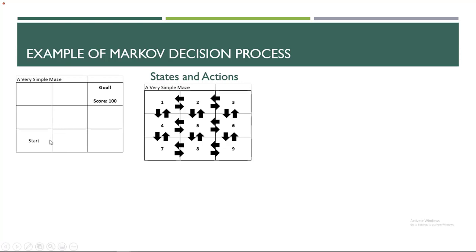Here's a simple example: a three-by-three grid maze with no walls. You start at one corner and want to reach the goal as fast as possible. Each square is one state — square one is state one, square two is state two, and so on. Actions are the four directions: up, down, left, right. If you go off the edge, you go back to the state you're in. If you're in state seven and go north, the state transition function puts you in state four. This is a Markov decision process.